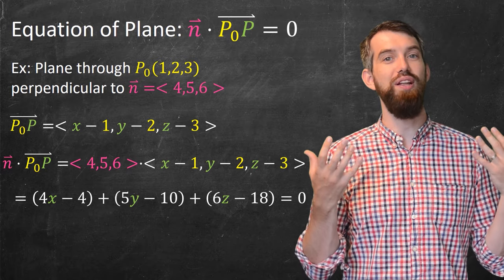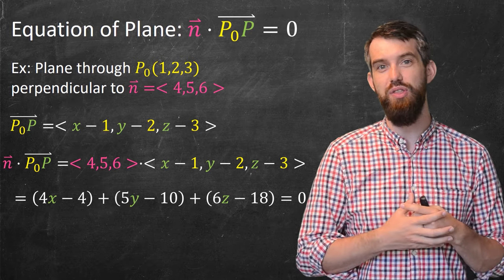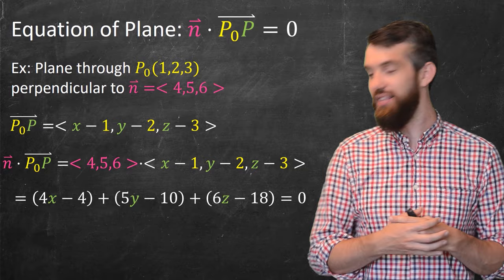This equation, by the way, is called its component form in contrast to the vector form that we have at the top, the n vector dotted the P₀ to P vector.